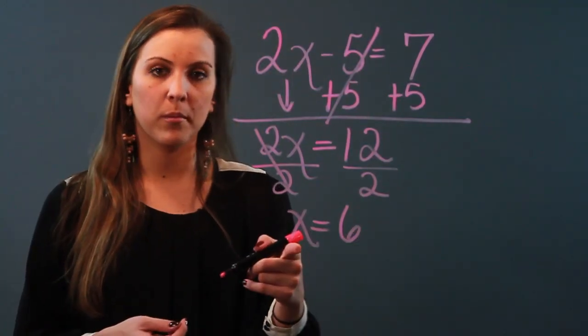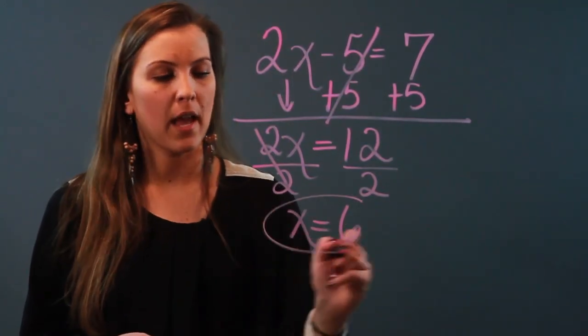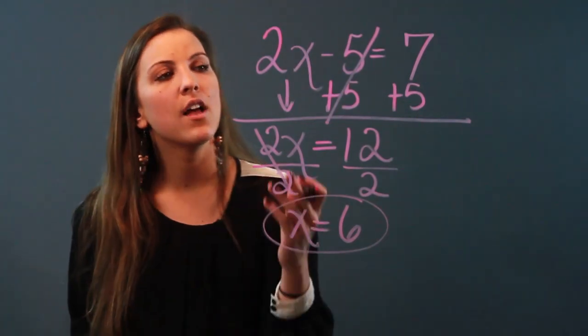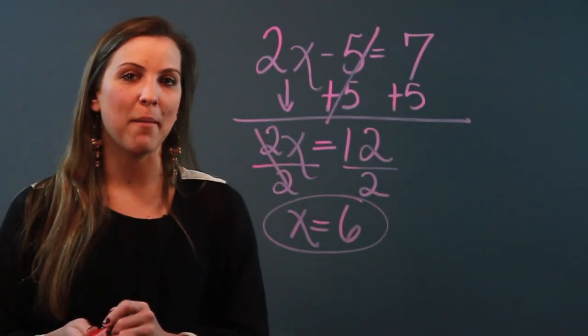And now that the variable is alone on one side of the equal sign, I'm done, and my solution is 6. So that is how you isolate a variable by using inverse operations.